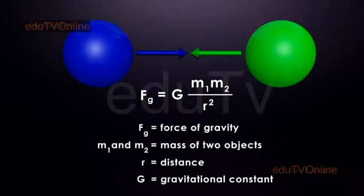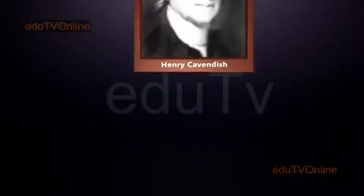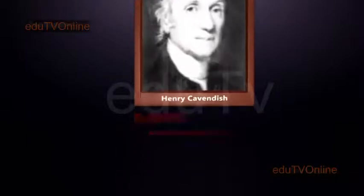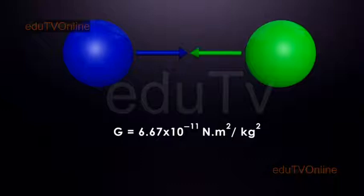The value of G was determined by scientist Henry Cavendish as G equals 6.67 times 10 power minus 11 meter squared per kilogram squared.